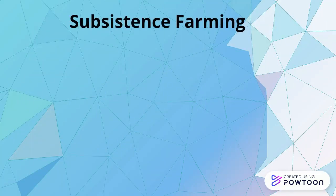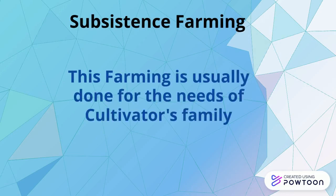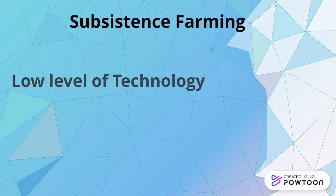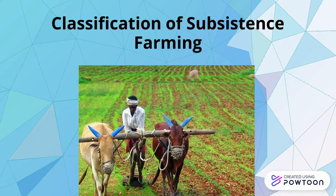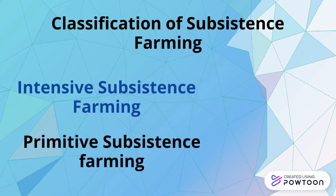Subsistence farming. This farming is usually done for the needs of the cultivator's family. In this type of farming, the cultivators use a low level of technology, less labor, and low yield. Subsistence farming is further divided into intensive subsistence and primitive subsistence farming.